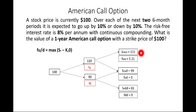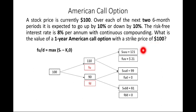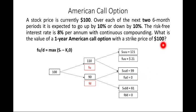We determine f_uu, f_ud, and f_dd using the formula max(S_T − K, 0). For f_uu: S_T = 121, K = 100, so 121 − 100 = 21, and max(21, 0) = 21. For f_ud: S_T = 99, so 99 − 100 = −1, and max(−1, 0) = 0. For f_dd: S_T = 81, so 81 − 100 = −19, and max(−19, 0) = 0.